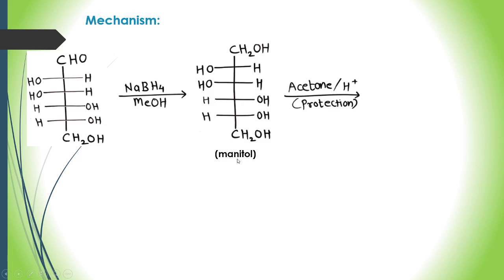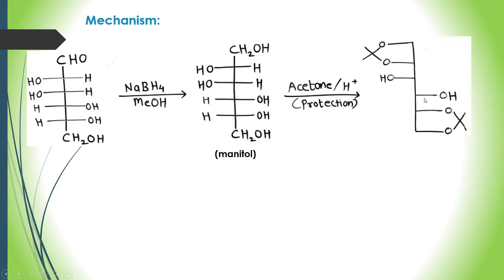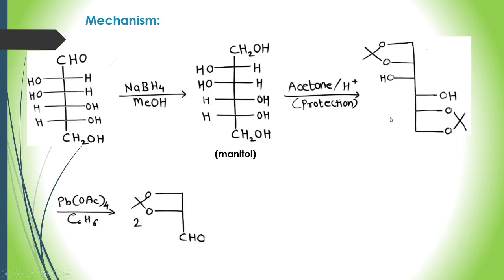When mannitol reacts with acetone in the presence of H+, there is protection of the diols. Mannitol has two primary alcohols and four secondary alcohols. The diol — the primary alcohol and adjacent secondary alcohol — can be protected using acetone in the presence of H+. This gives the protected form of D-mannitol.